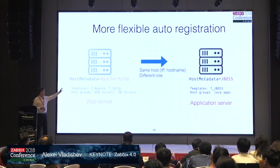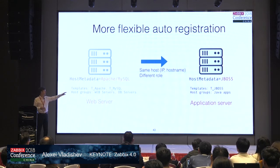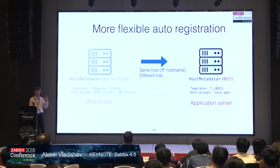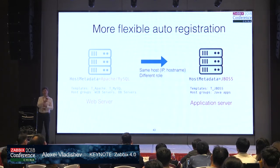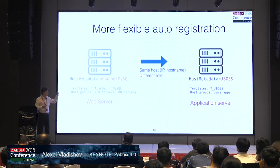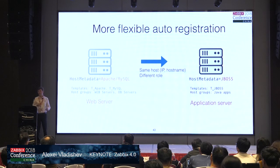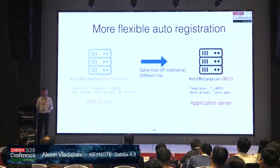But what happens if the same host after some time is used for a different purpose — same IP address and host name, but now it plays a different role, for example running a JBoss application as an application server? Starting from Zabbix 4.0, it's possible to automatically switch the role of a discovered host: switch from the Apache/MySQL template to the JBoss template, and switch host groups from web servers and database servers to the Java application group. This happens automatically — we don't have to do anything by hand.